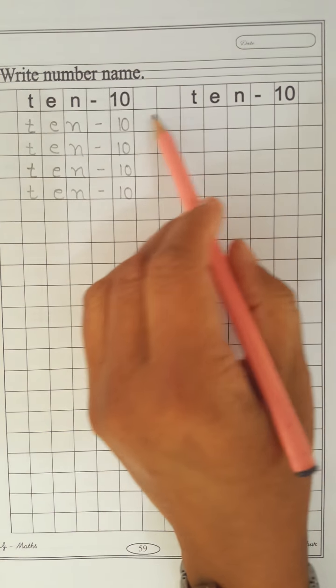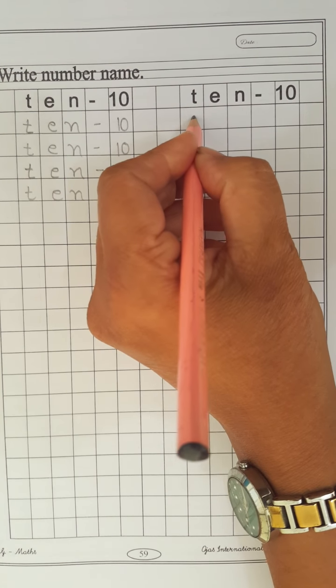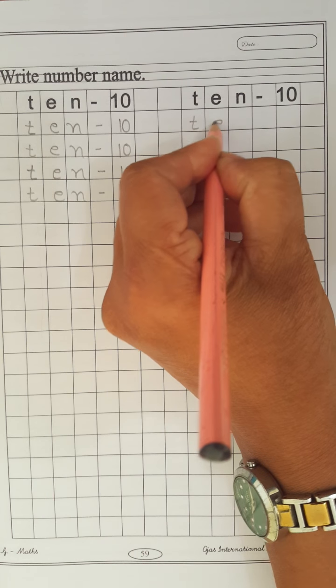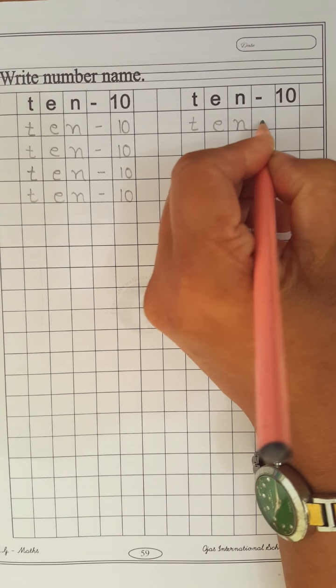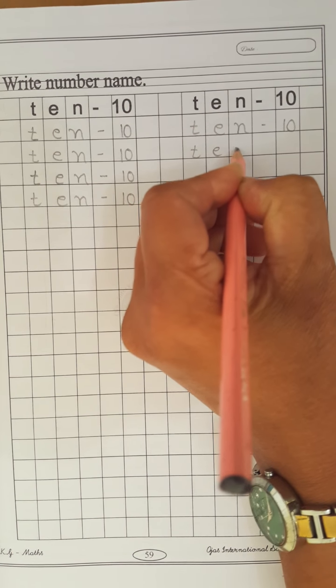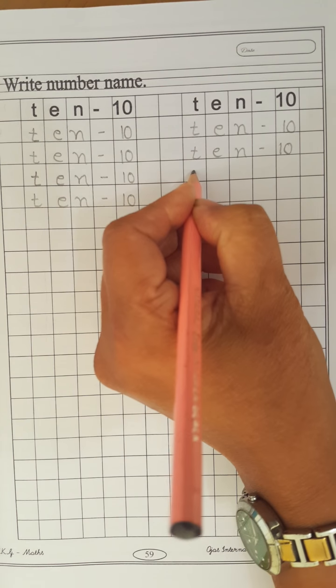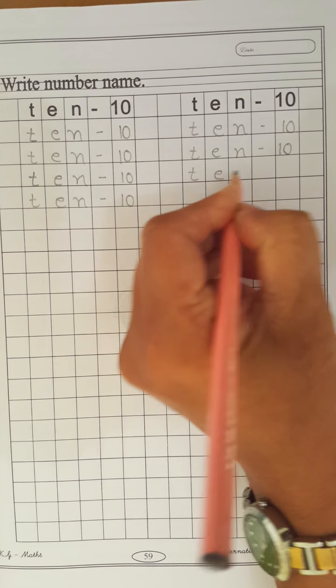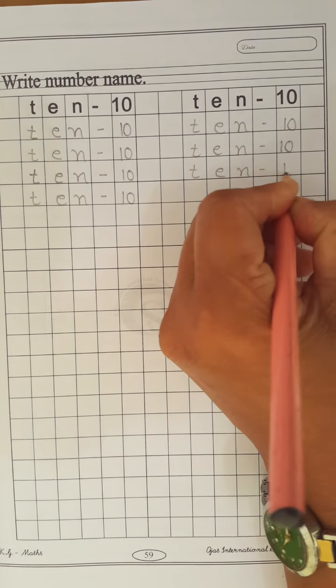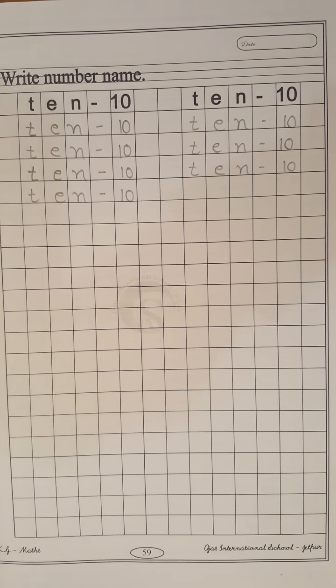And then after, leave these two lines. And then again start with this box. T-E-N-10. T-E-N-10. T-E-N-10. Children, always speak and write. Okay, children? T-E-N-10. In this way, you have to complete this full page. That's right.